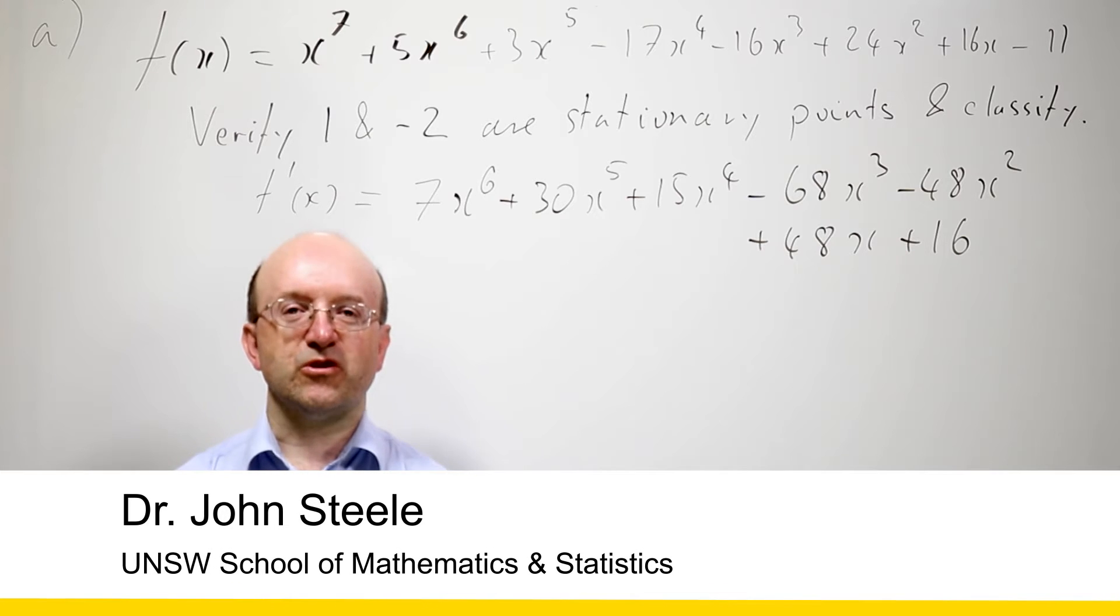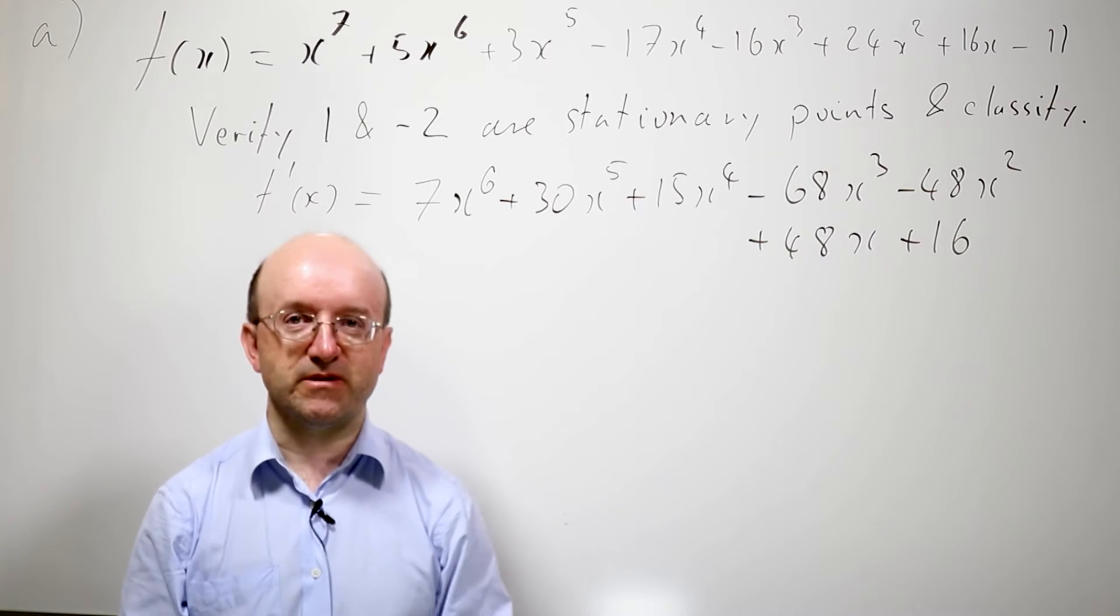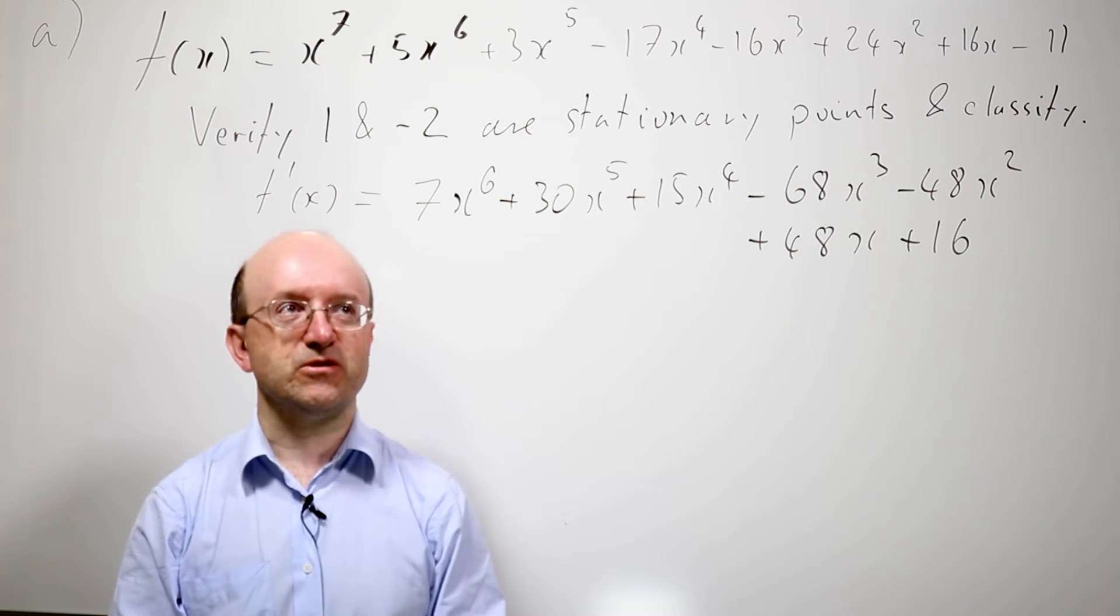G'day. In this problem, we're going to use the Corollary to Taylor's theorem to classify the stationary points of a function. In this case, a polynomial, a polynomial degree 7, just to give us something of interest to use.